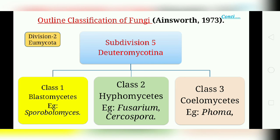The third class is Coelomycetes. They are formed by mycelial cavities. They reproduce asexually by conidiomata, which may be in a special rounded form or stromatic openings form — a saucer shape — with conidium spores inside. An example is Phoma.